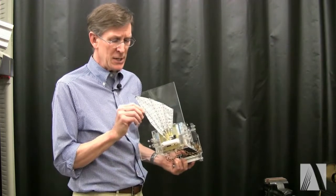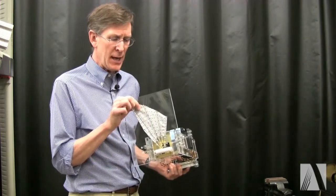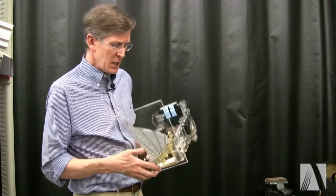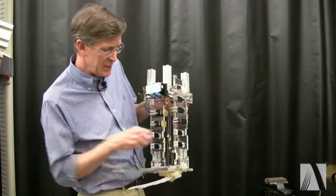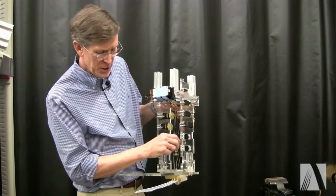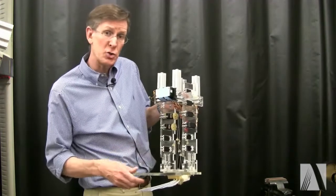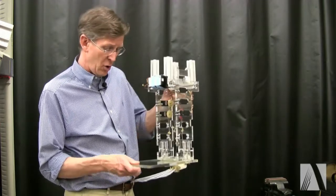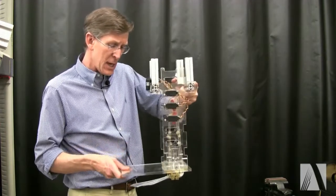It contains individual fin rays and a web-like membrane. Each of these rays is controlled by individual tendons attached to motors and the whole device is computer controlled so we can move the fin in a wide variety of ways under computer control and the whole fin sits in a flow tank in a fish treadmill.